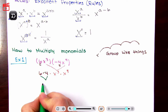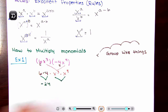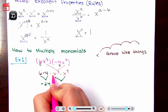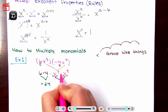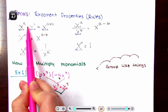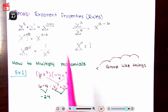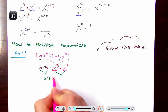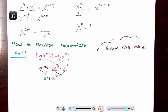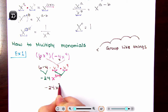So 6 times negative 4 is negative 24. Here's where your first property comes in: if you have two bases that are the same — x and x — and you're multiplying them together, you add the exponents. So I have x to the 3 plus 4, and 3 plus 4 is 7. So my final answer is negative 24 x to the 7th power.